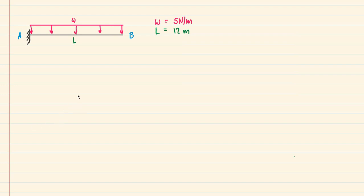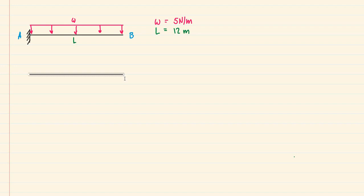Welcome to another example on shear moment diagrams. Here we have a cantilevered beam off of a fixed end with a distributed load of five newtons per meter acting downward uniformly across the entire span A-B. The length of the span is 12 meters. Just like before, we want to draw our free body diagram first, which will help us get our shears and moments.